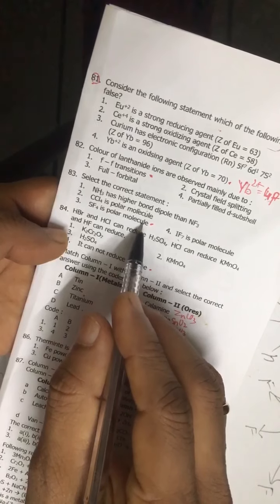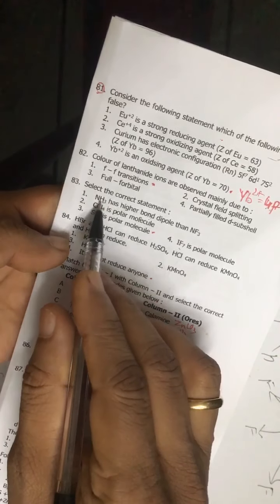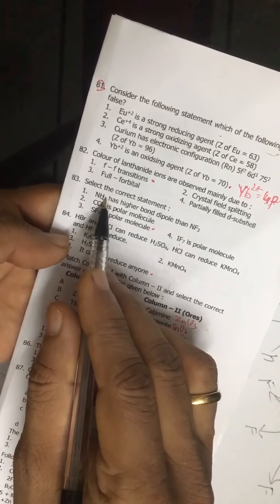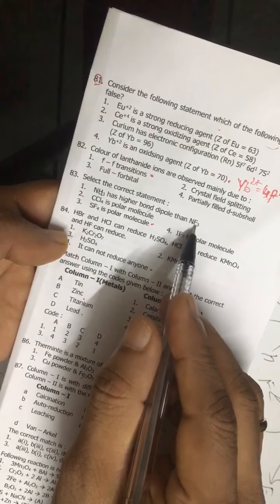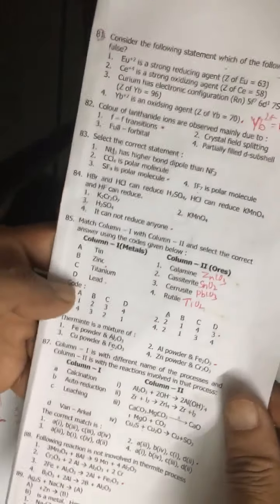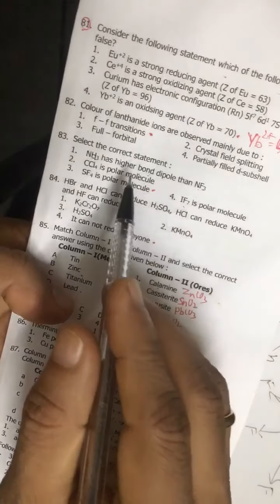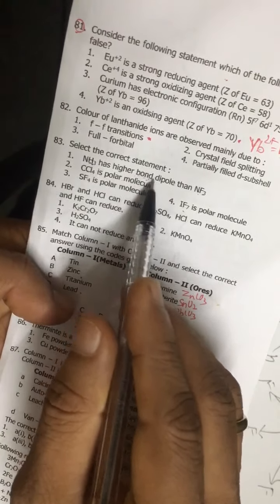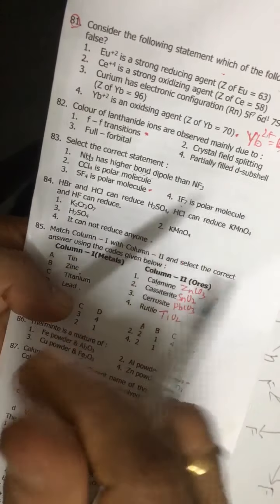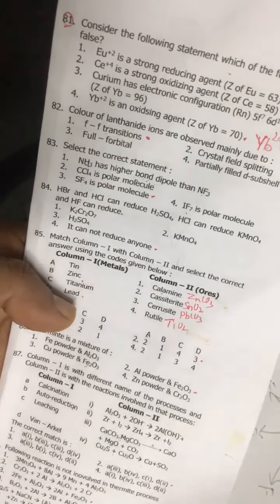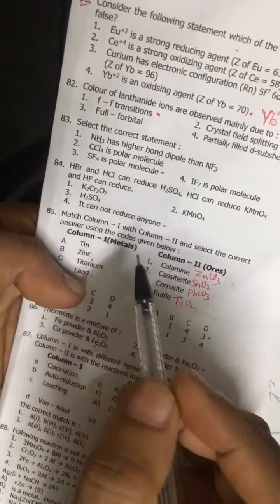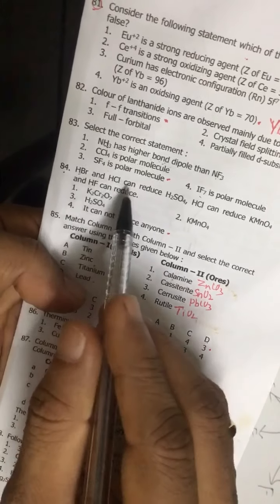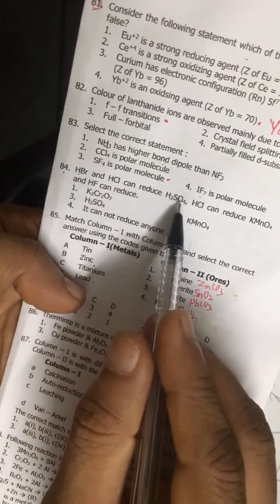First statement is also correct if it is the dipole moment of ammonia - ammonia has a greater dipole moment than NF3. If it says this statement is also correct, so you should be careful. And regarding bond dipole, I don't know whether it is talking about the polarity of a particular bond - in that case, that is also NH3 should be more, I think.